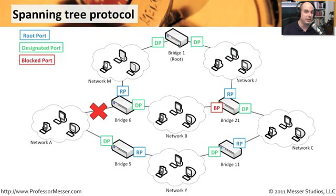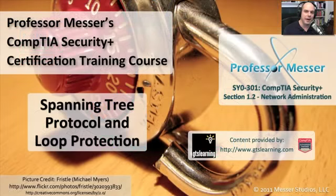This is a critical piece of how spanning tree technology works, and there are a lot of details underneath the surface — this has been a high-level view. It's a great way to prevent loops, and also a great way to create redundancy in your network so that if you do happen to have an outage, you still maintain availability. From a security perspective, this also maintains uptime and prevents those loops from bringing down your network and creating a denial of service situation.